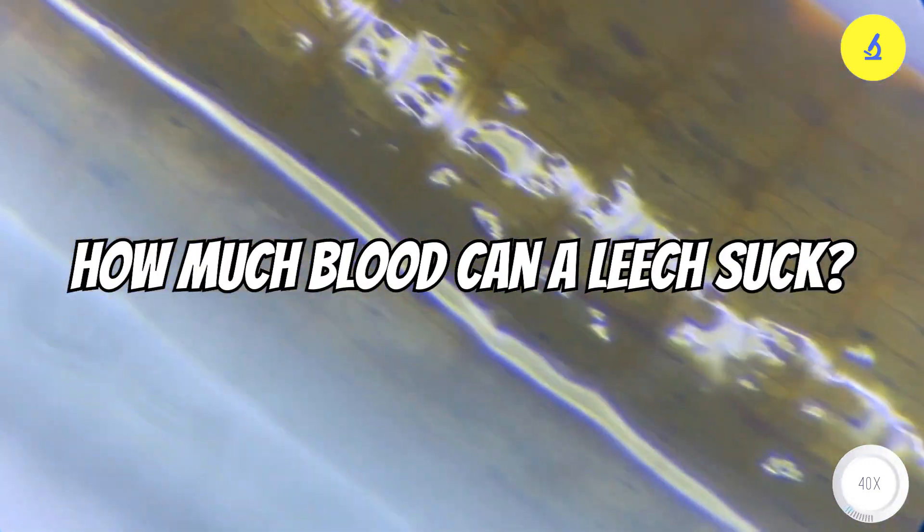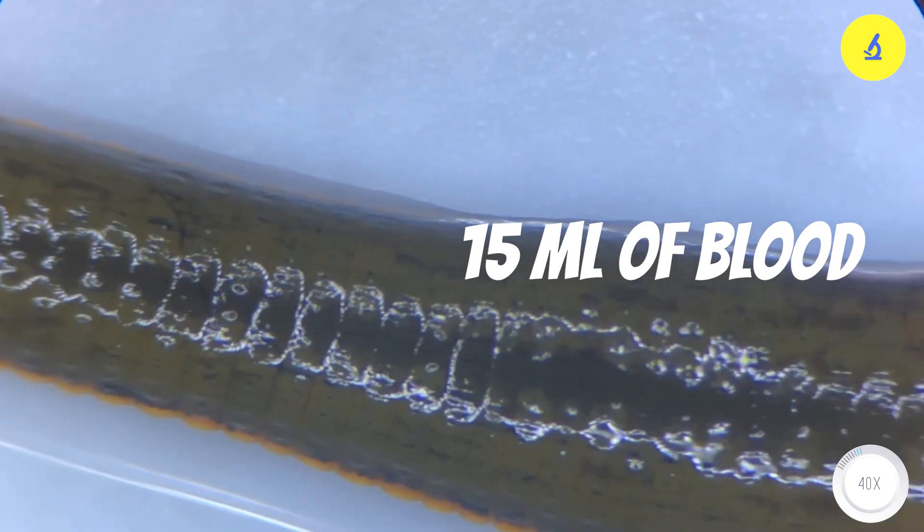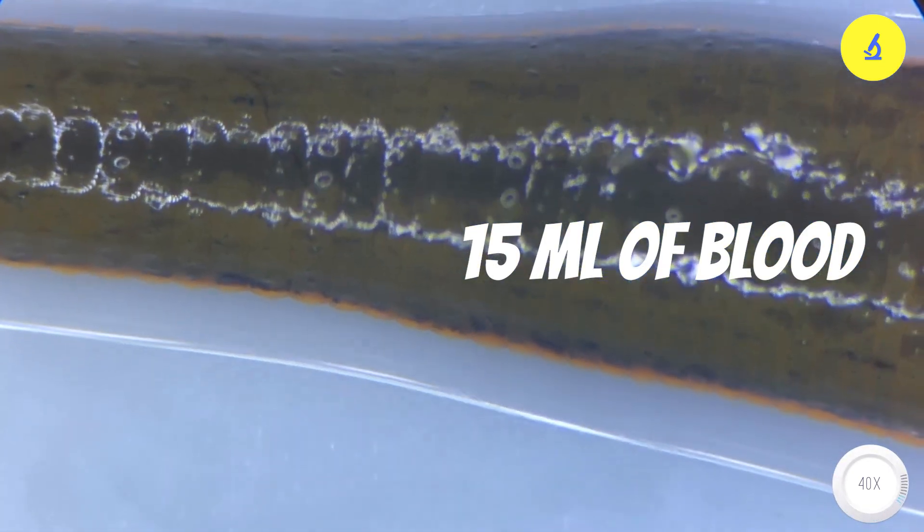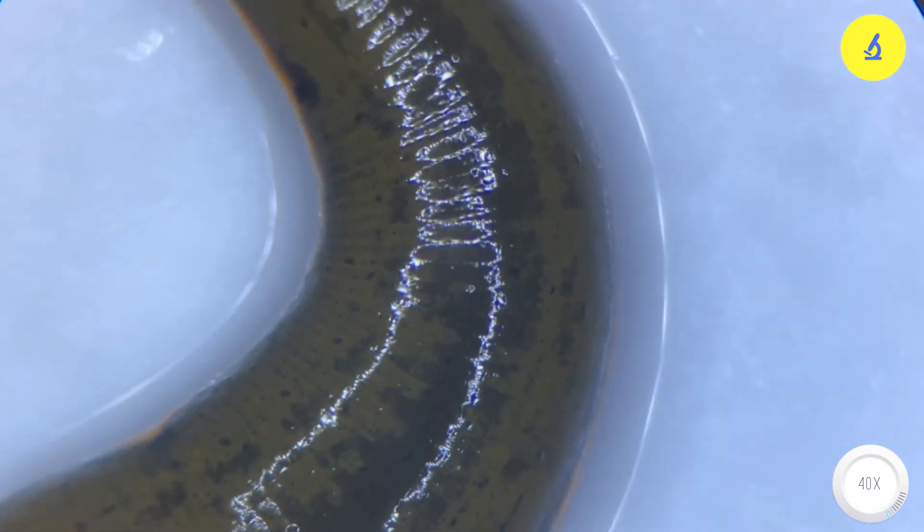How much blood can a leech suck? A single leech can suck up to 15 milliliters of blood, and only after that, it can hold up to 15 milliliters more. Therefore, each leech is capable of taking up to 30 milliliters of blood from our body. The leech's body can hold several times its own body weight in blood, which is why it only leaves its host after it is full.